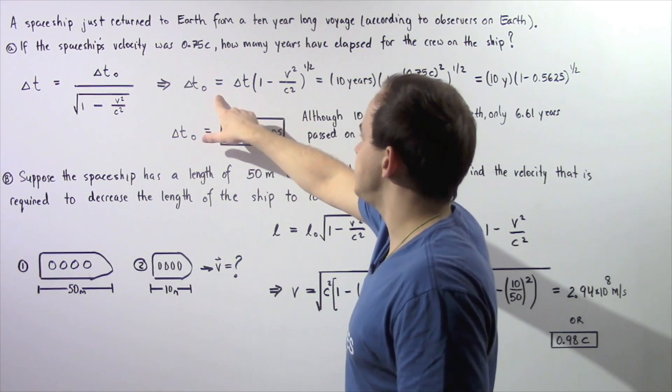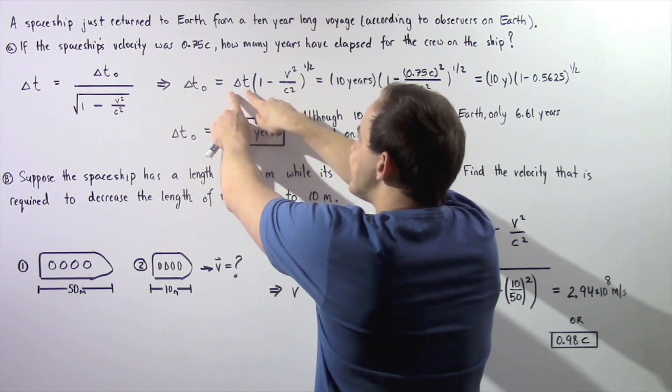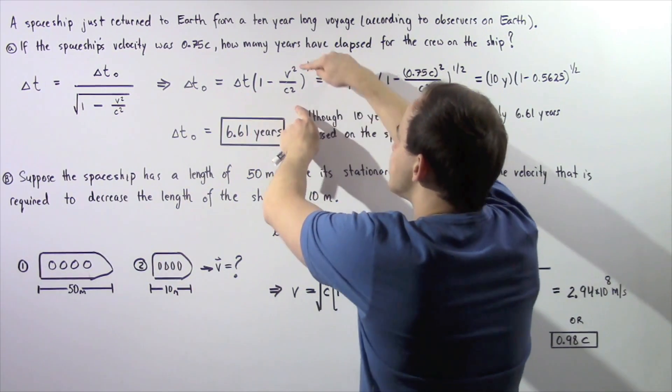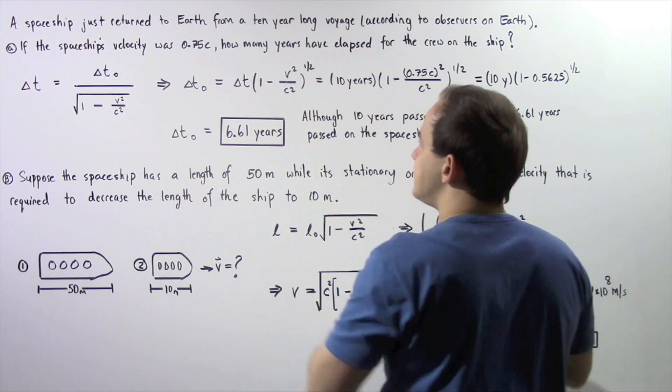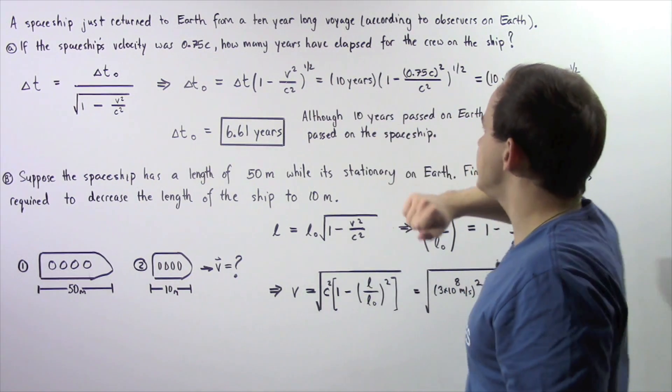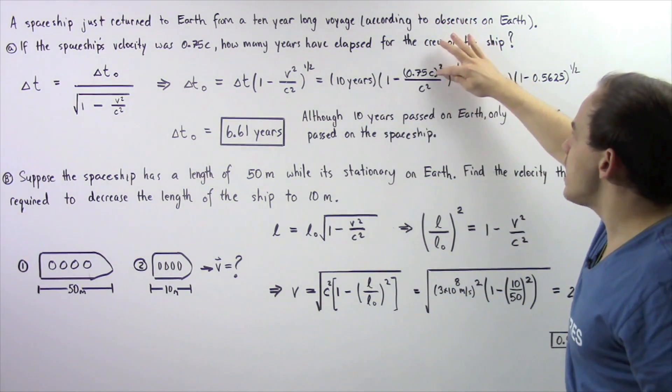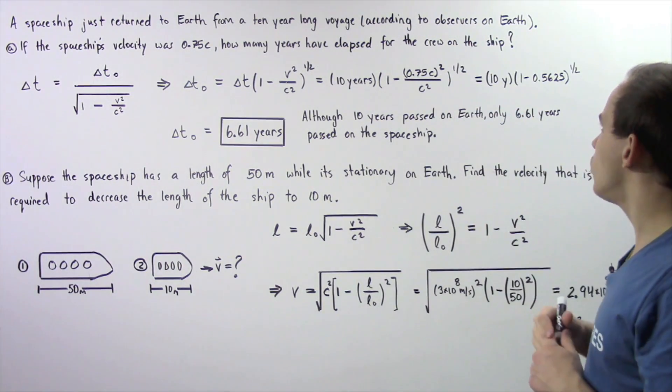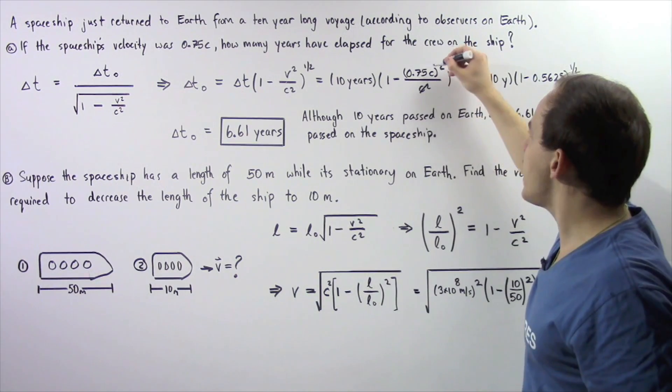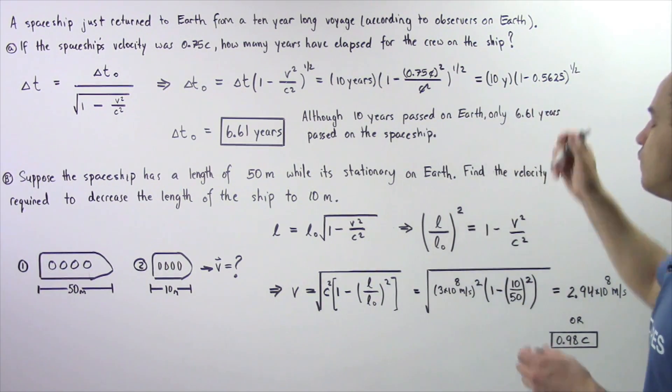The proper time is equal to delta T, the quantity of time that has elapsed on Earth, multiplied by the square root of 1 minus V squared divided by C squared. Delta T is given to be 10 years and V is equal to 0.75 C. We square this quantity and notice the C's will cancel from top and bottom. If we square 0.75, we get 0.5625.